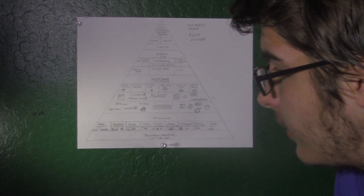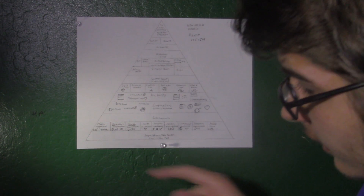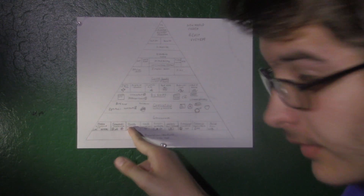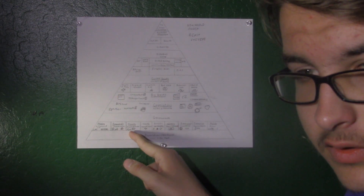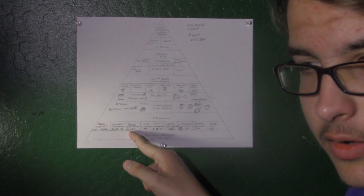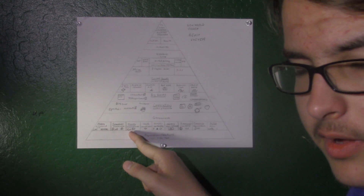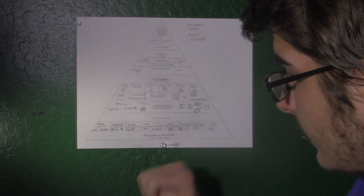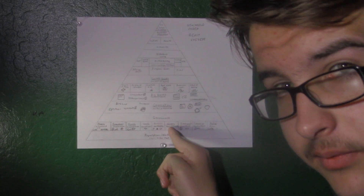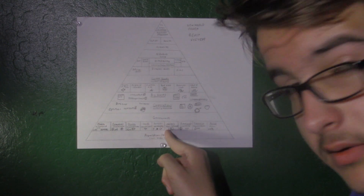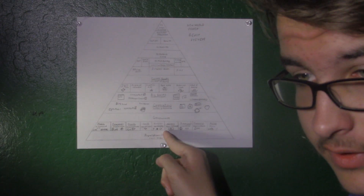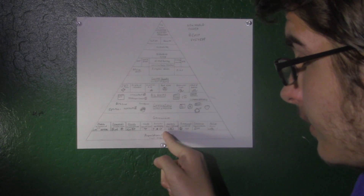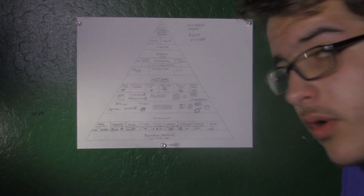Some of these aren't as dangerous in some countries as they are in America. For example, they don't fluoridate the water in most of Europe, and some European countries don't have GMO foods. Today I'm going to start right with military — they control with wars and conquest.